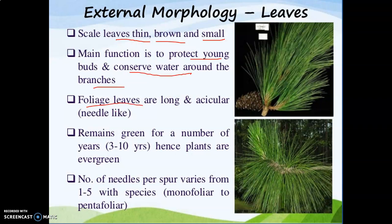The second type of leaf is the foliage leaf. Foliage leaves are long and acicular — acicular means needle-like in shape, which is why they are also called needles. These needles remain green for several years, about three to ten years, that is why these plants are evergreen plants — because the senescence period is very long. The number of needles varies from one to five with the species, so they can be monofoliate, bifoliate, trifoliate, tetrafoliate, or pentafoliate.